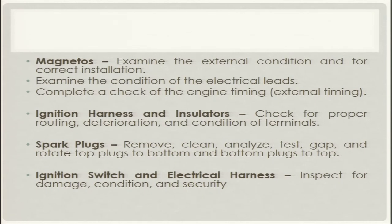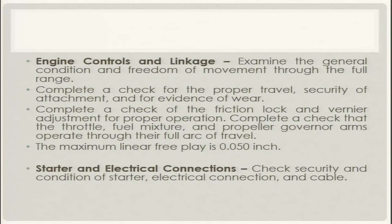The spark plugs are to be removed, cleaned, analyzed, tested, gap adjusted, and rotated — top plugs moved to the bottom and bottom plugs to the top. This is also a very important feature of the 100-hour inspection. The ignition switch and electrical harness should be inspected for deterioration, condition, and security. Next is engine controls and linkage: inspect the general condition and freedom of movement through the full range, check for proper travel, security of attachment, and evidence of wear. All cotter pins should be in place and there should be no wear in the controls.